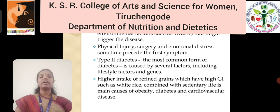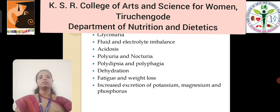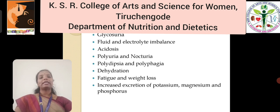Higher intake of refined grains which have a higher glycemic index, such as white rice, combined with a sedentary lifestyle, is a main cause of obesity, diabetes and cardiovascular disease. Symptoms include hyperglycemia, glycosuria, fluid and electrolyte imbalance, acidosis, polyuria and nocturia.